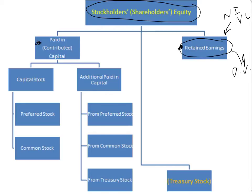The third part, usually presented at the very bottom of the section, is what's called treasury stock. I've made them yellow and put it in parentheses. Why? Because treasury stock is subtracted from the whole equity section.